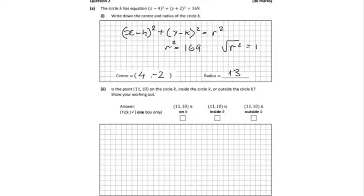On to question 2 now. Let's check if the point (11,10) is on the circle. To check if it's on the circle, we need to replace the x and y in the original equation. So let's do that with the calculator. First of all, (x-4)² will be (11-4)².